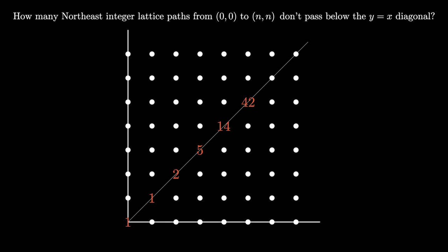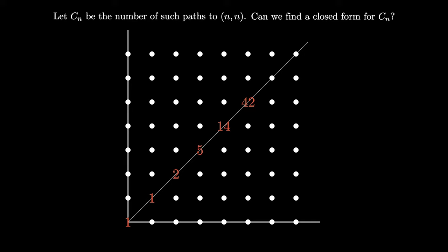As I said, we know already how to find a recursion for this sequence. But if we let c_n be the number of such lattice paths to (n,n), can we now find a closed formula for this integer sequence?